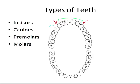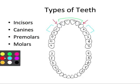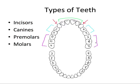The premolars are the next two teeth back from the canines and are useful for tearing, holding, and grinding food. The back three teeth are referred to as the molars — the first, second, and third molars. The third molars are usually referred to as the wisdom teeth. The premolars and molars combined are called the posterior teeth because they're in the back. So we have the incisors, the canines, the first and second premolars, and the first, second, and third molars — the same layout for the mandibular arch.